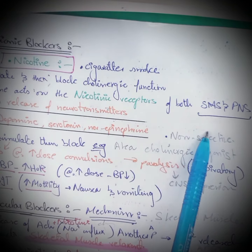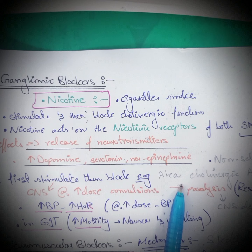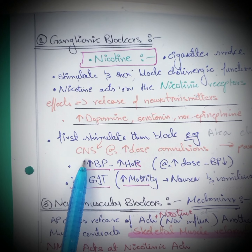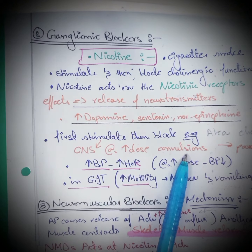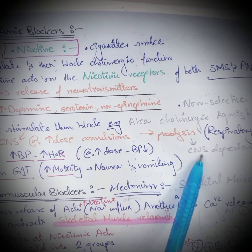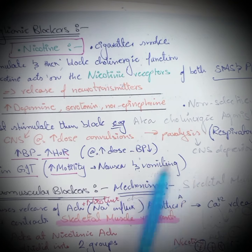Nicotine acts on the nicotinic receptors of both the sympathetic and parasympathetic nervous systems — it stimulates first and then blocks the receptor, which is why these are known as cholinergic agonists. At high doses, it causes convulsions in the CNS and eventually leads to paralysis. It also increases blood pressure and heart rate, but at a higher dose can eventually cause a decrease in blood pressure.